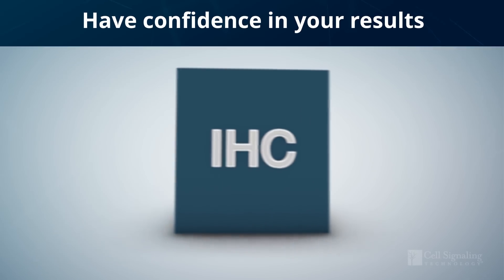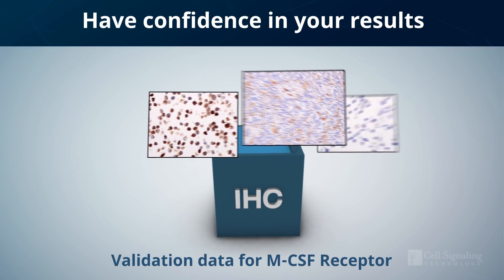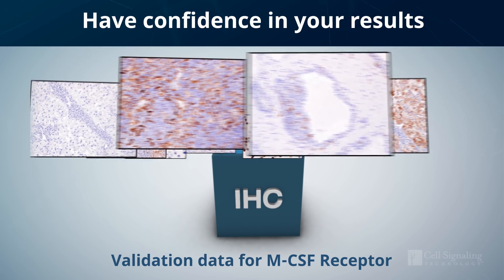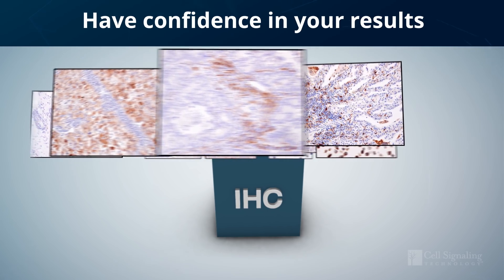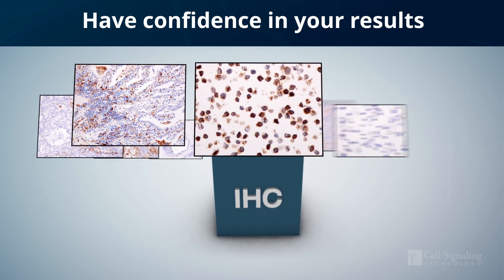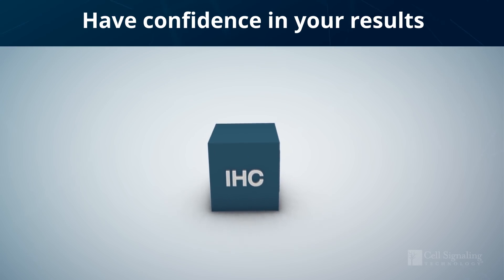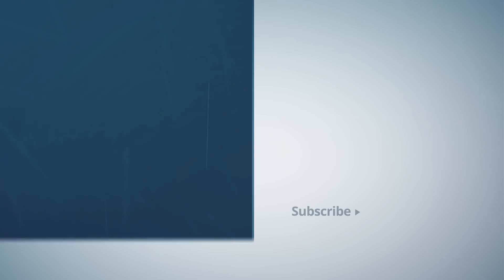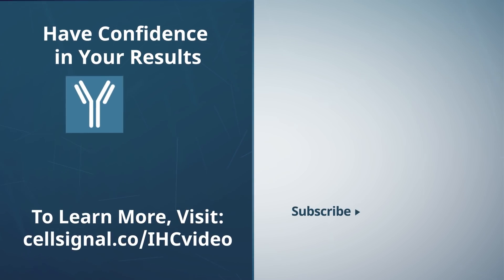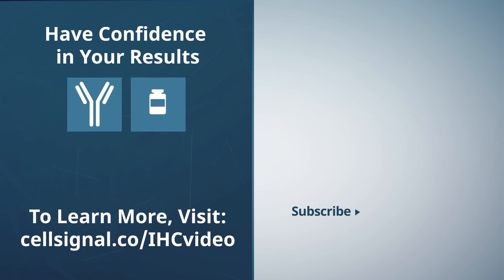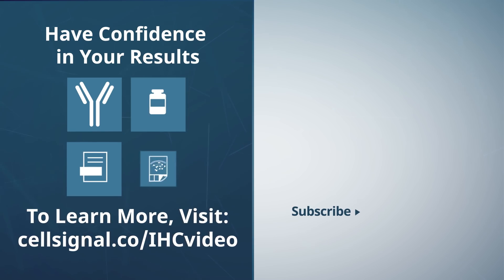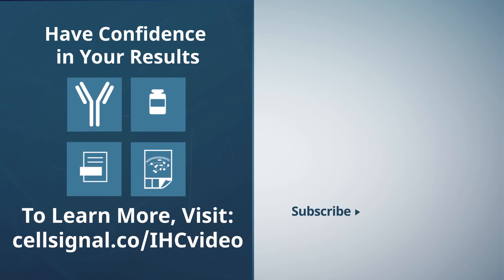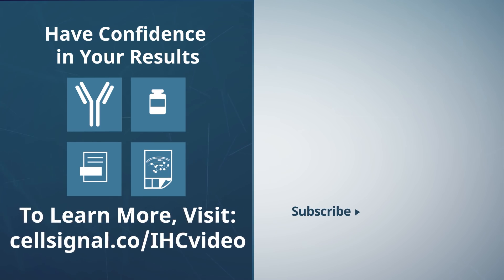Antibody validation is important, but again, no single assay is sufficient to confirm specificity. It's the combination of multiple validation assays into an IHC data package that ensures that the staining you observe with each Cell Signaling Technology antibody is specific and believable. To learn more or to find antibodies, companion reagents, protocols, and resources for your next IHC experiment, please visit us at cellsignal.com/IHC-video.